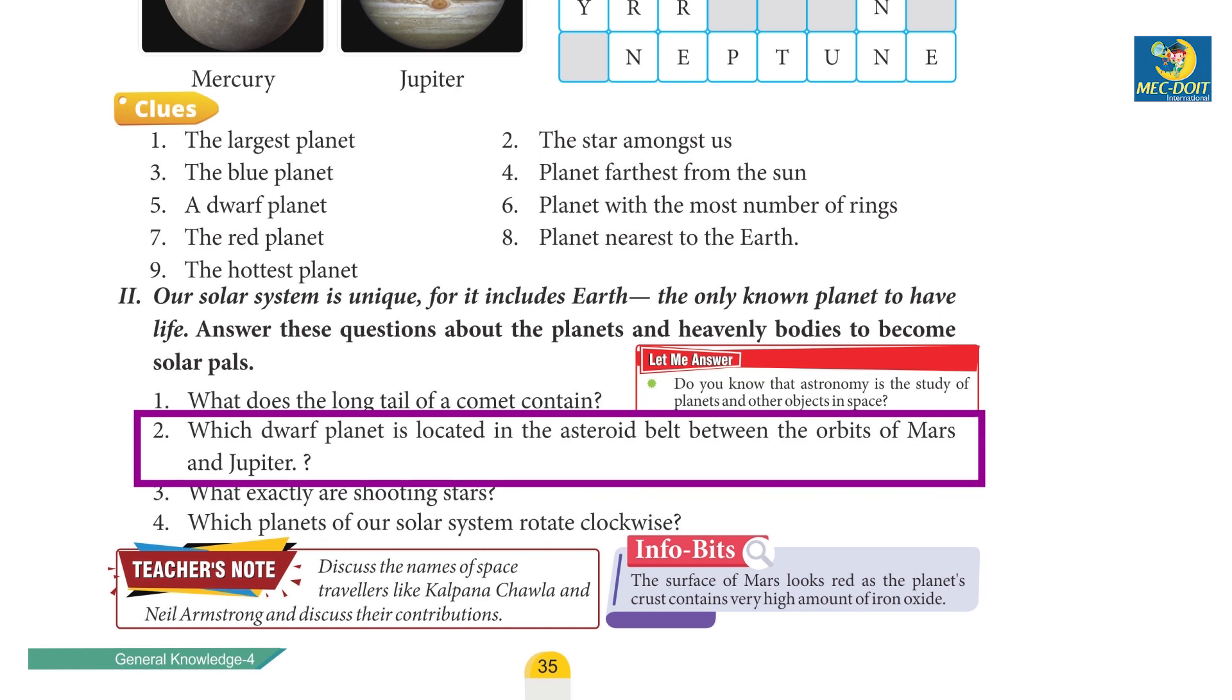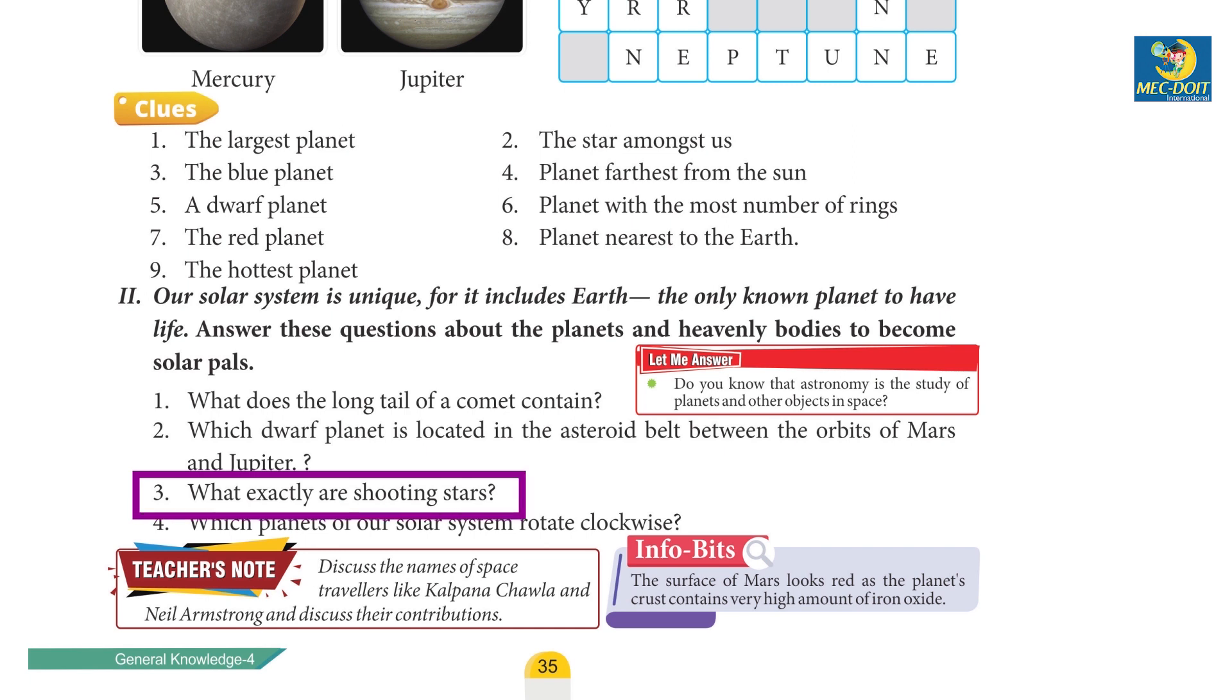2. Which dwarf planet is located in the asteroid belt between the orbits of Mars and Jupiter? 3. What exactly are shooting stars?